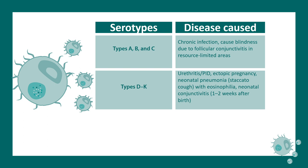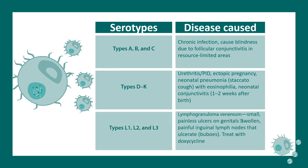Serotypes L1, L2, and L3 can lead to lymphogranuloma venereum — a small, painless ulcer on the genitals, with swollen and painful lymph nodes that can lead to many complications. Basically, the lymph nodes form bubble-like structures and ulcerate.